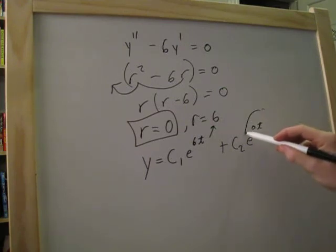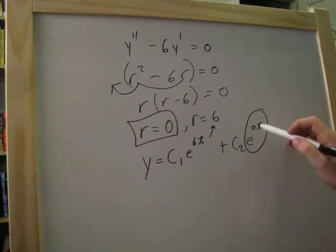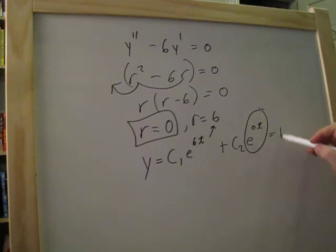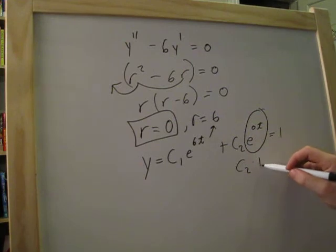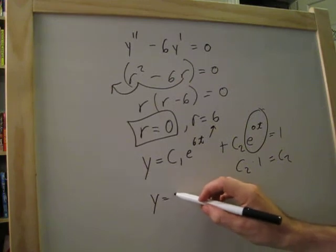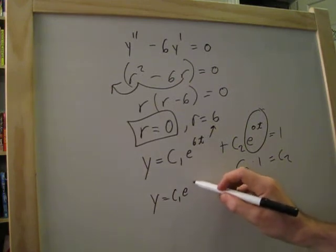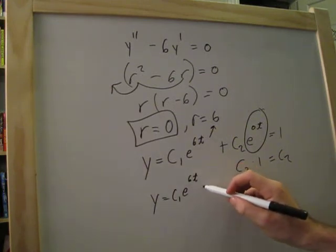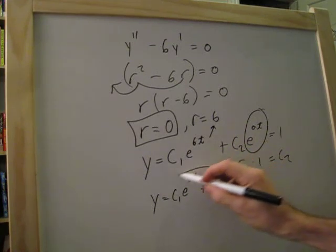Since we have 0t, e to the 0 equals 1. So we have c2 times 1 equals c2. Our final general solution would be c1 times e to the 6t plus c2, and there we have it.